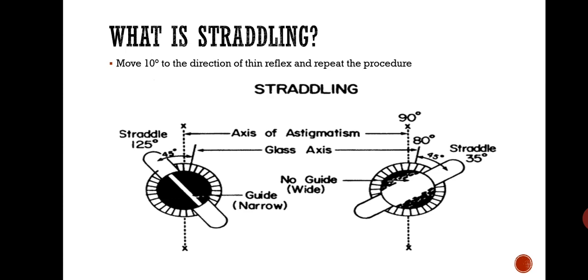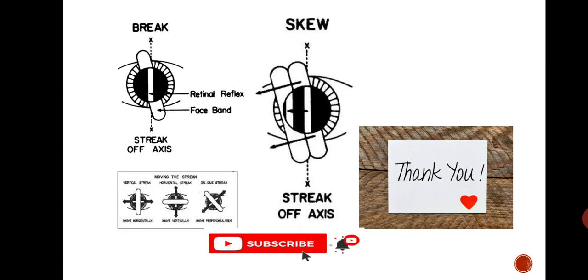You must move the axis of the cylinder in the trial frame in the direction of the thin reflex. So move towards the thin reflex — for example, move to 80 degrees — and then do the straddling technique again. After this first correction step, with the axis now at 80 degrees, again scope 45 degrees on each side and continue until both reflexes are equal in width and brightness.